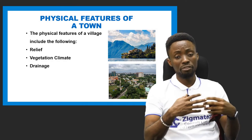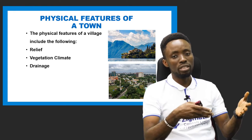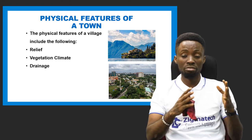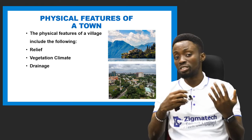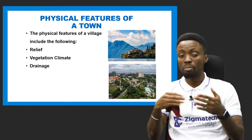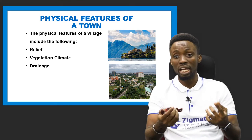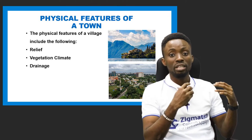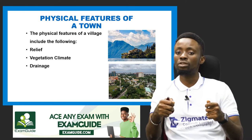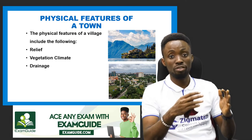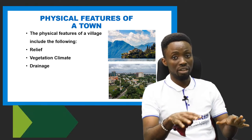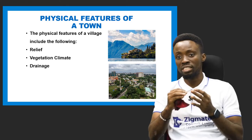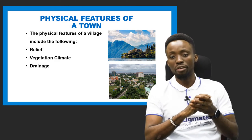Heading to a town, we also have physical and cultural features. Regarding physical features, a town can be in a highland or lowland relief. As previously discussed, if a town is located where there is a plateau, its relief would be that of a highland. For example, places like Jos, and north-central areas like Kaduna and Sokoto, have towns located on highlands or plateau areas. Jos is the capital of Plateau State and is found on a highland terrain.